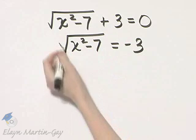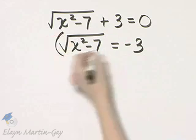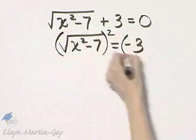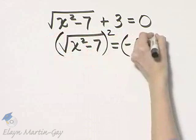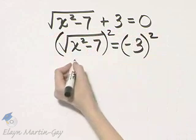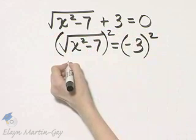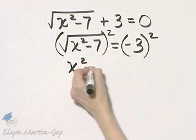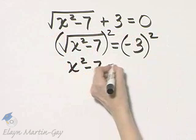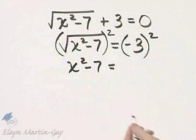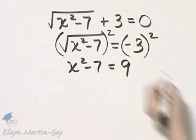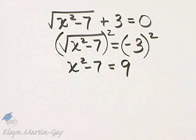Next, I would square both sides — square the left side, square the right side. The left side squared is x squared minus 7. Negative 3 times negative 3, the right side is 9.